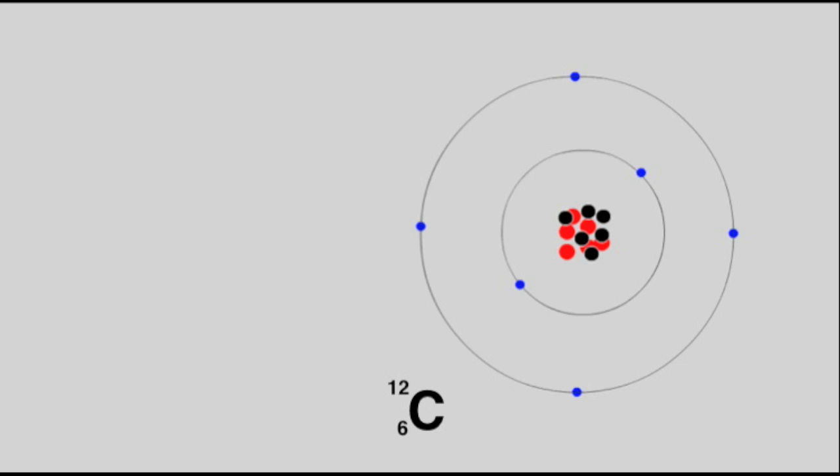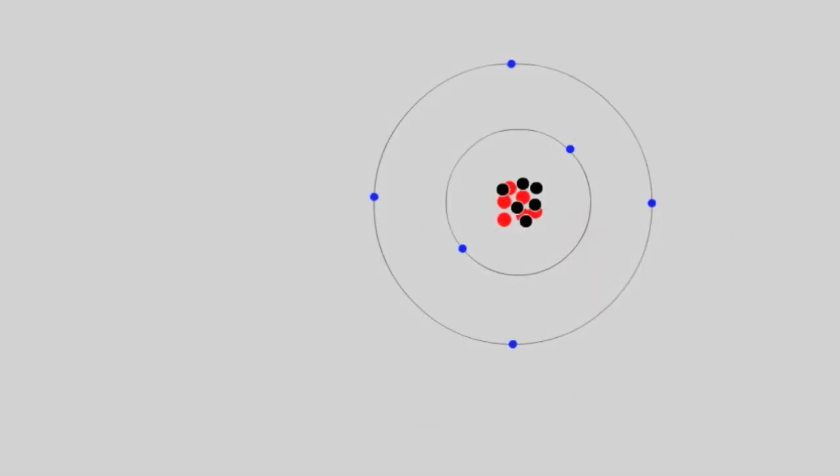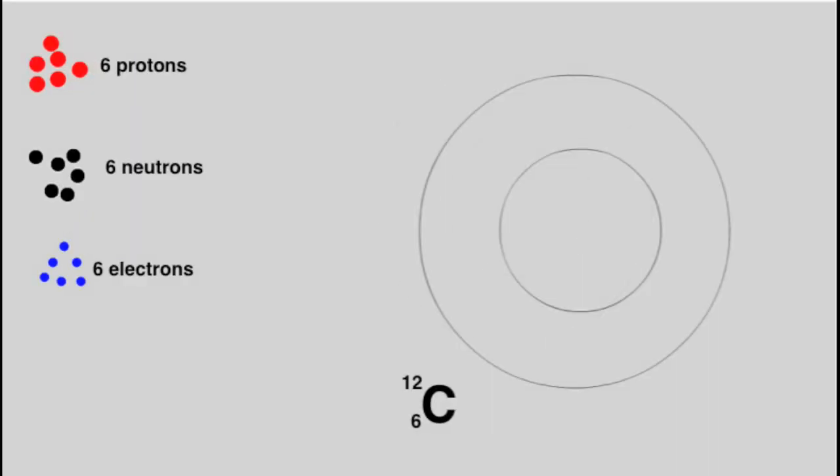Almost all elements exist in more than one form. These different forms are called isotopes. Pictured here is the most common isotope of carbon, that is carbon-12. If we split this picture into its component parts, we can see that the atom has six protons, six neutrons and six electrons.